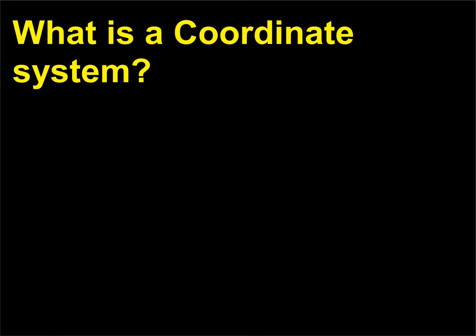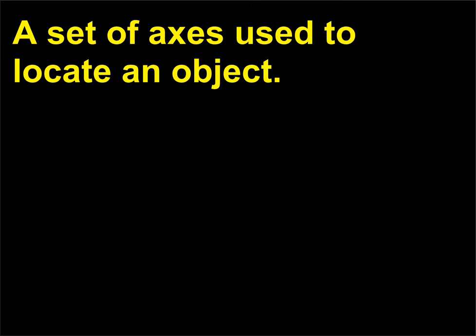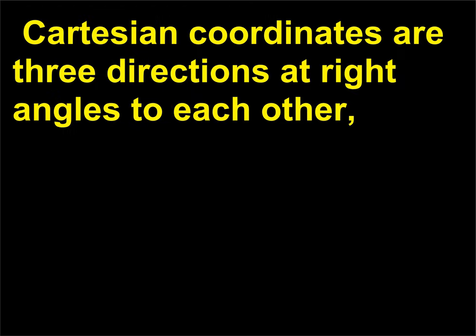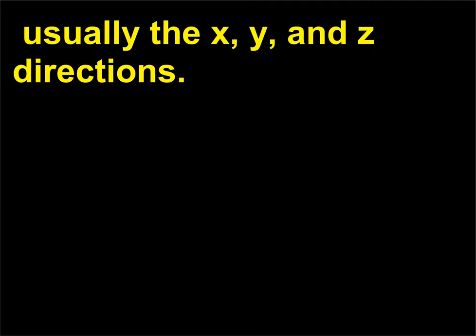What is a coordinate system? A set of axes used to locate an object, usually defined at the reference location. Cartesian coordinates are three directions at right angles to each other, usually the x, y, and z directions.